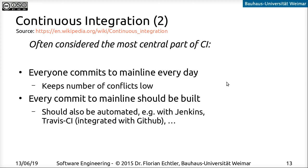The next two good practices are considered the most central part of continuous integration. First, everybody working on the project should merge their code back into mainline at the end of the day at the very least. That means fewer merge conflicts and your code doesn't develop into completely independent branches that would take a lot of work to pull together again.